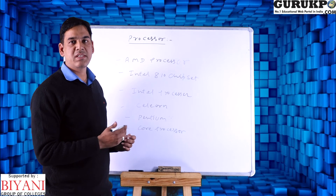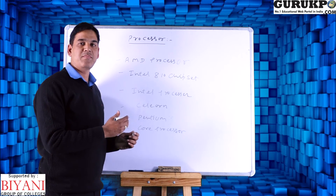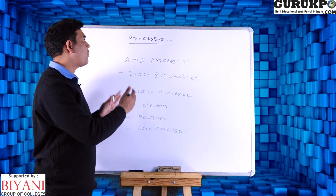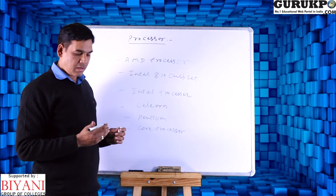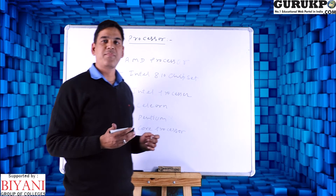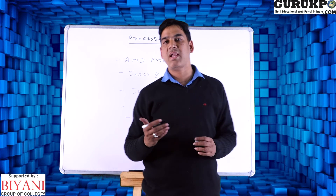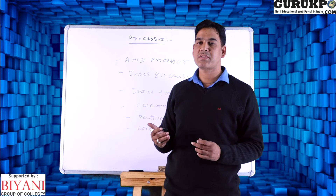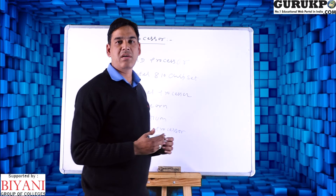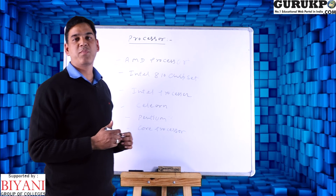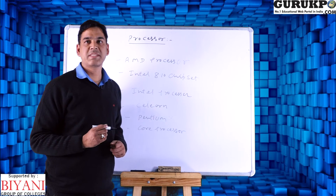So we can say that this is the basics of processor types. We have different types of processors measured in gigahertz, like 1 gigahertz, 10 gigahertz, 16 gigahertz — different types of processors are available.